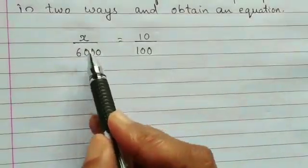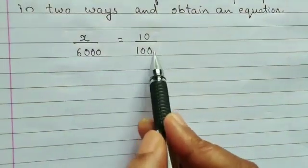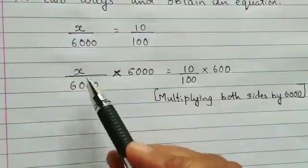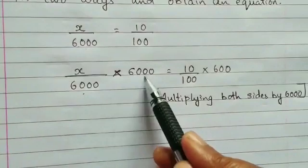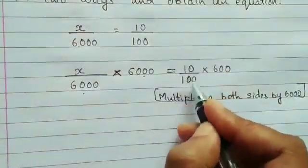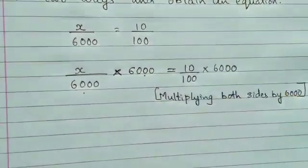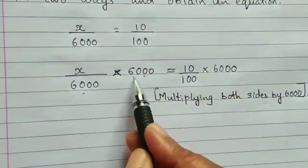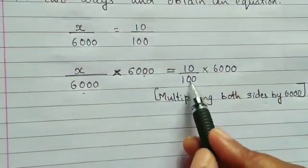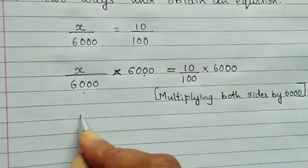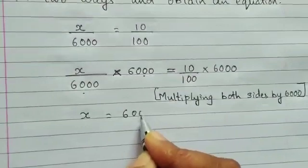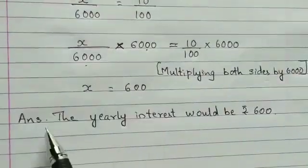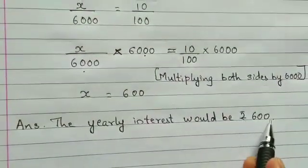We want to find the value of X, so let us multiply both sides by 6000. X upon 6000 multiplied by 6000 is equal to 10 upon 100 multiplied by 6000. The 6000 and 6000 cancel out, and cancelling the zeros, you get the value of X as 600. The yearly interest would be rupees 600.